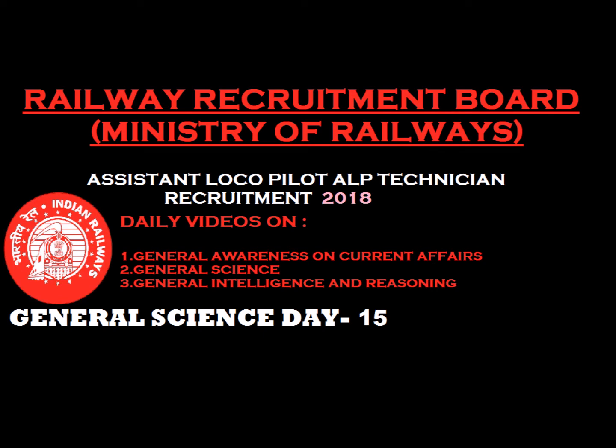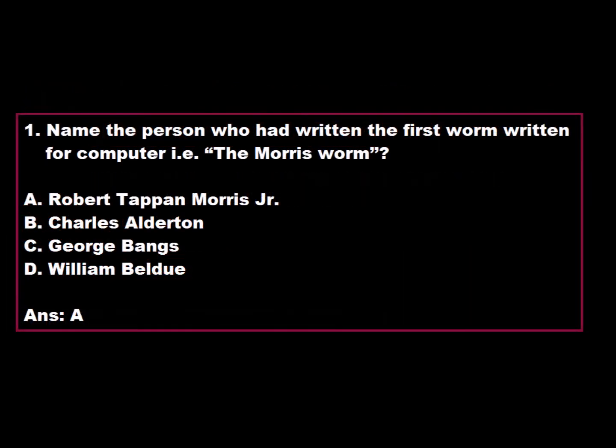General Science Day 15. Question 1: Name the person who had written the first worm written for a computer, i.e., the Morris Worm. Option A: Robert Tappan Morris Jr. Option B: Charles Alderton. Option C: George Banks. Option D: William Beldu. Option A is correct. Robert Tappan Morris Jr. had written the first worm for the computer, i.e., the Morris Worm.